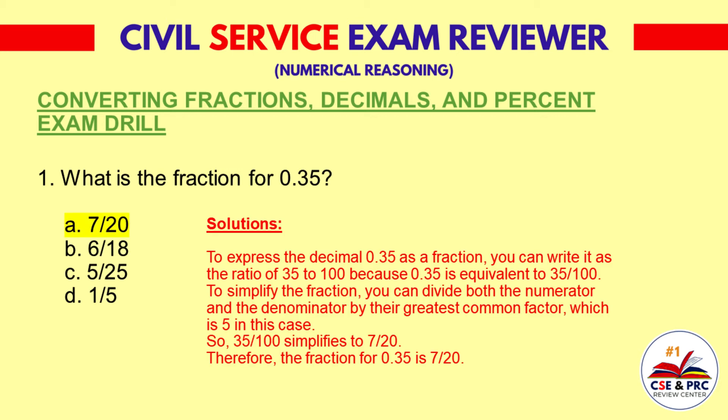Solution: To express the decimal 0.35 as a fraction, write it as 35 over 100, because 0.35 is equivalent to 35 over 100. To simplify, divide both the numerator and the denominator by their greatest common factor, which is 5. So 35 over 100 simplifies to 7 over 20. Therefore, the fraction for 0.35 is 7 over 20.